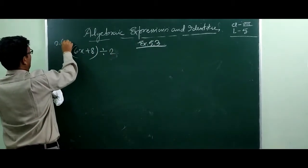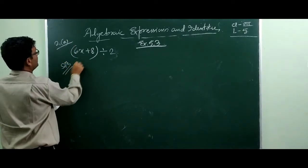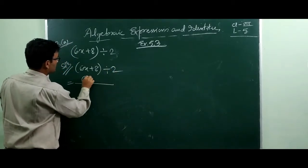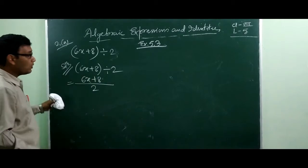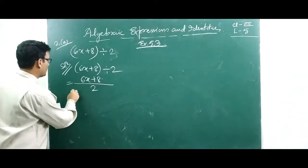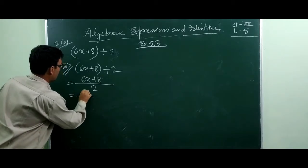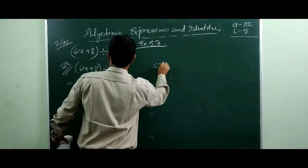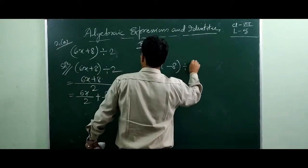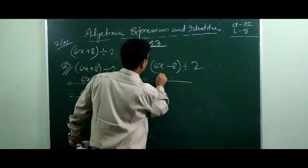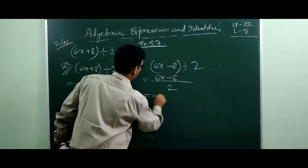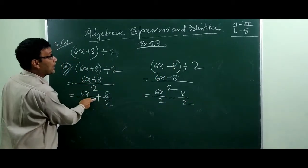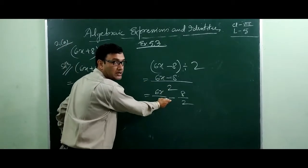Solution: 6x plus 8 divided by 2. You will do part-by-part division — meaning 6x by 2 plus 8 by 2. If the question were 6x minus 8 divided by 2, you would write 6x minus 8 divided by 2. See here: plus gives plus, minus gives minus — that is the difference.